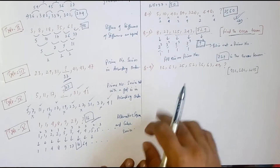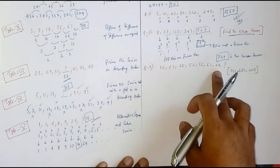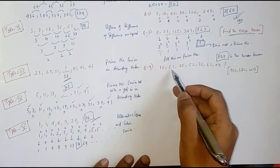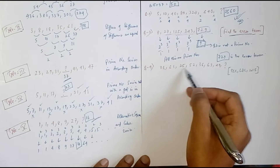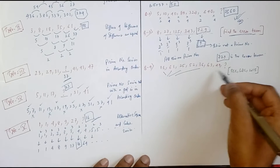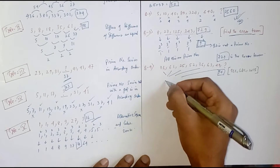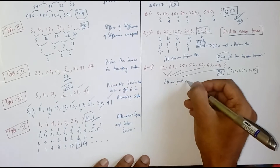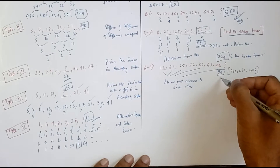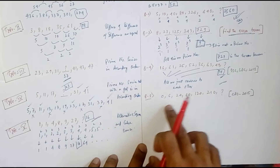Next example: 16, 61, 25, 52, 36, 63, 49 — by seeing this problem we can say there is a reversal trend. 16 gets reversed to 61, 25 gets reversed to 52, 36 gets reversed to 63. So similarly, 49 reversed will be 94. So 94 is the missing number.